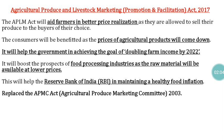The Agriculture Produce and Livestock Marketing Promotion Facilitation Act 2017, called the APLM Act in short, aids farmers in better price realization. Farmers are allowed to sell their produce to buyers of their choice, so middlemen are removed. Because of this, farmers will get a better price for their produce and consumers will also get produce at a lower price.